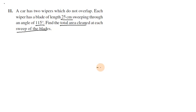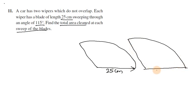A car has two wipers. This is a sweep. The length is 25 cm and they do not overlap. One of the wipers sweeps 115 degrees.